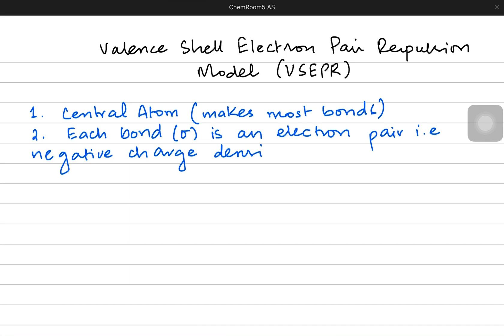So negative charge density, for example, let's take an example of ammonia NH3. It has three bonds with three hydrogen atoms. Each bond is actually a bond pair which is an electron density. And all these electron density regions are negatively charged.